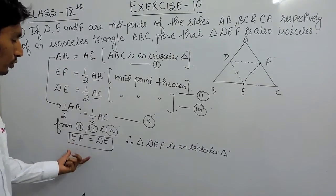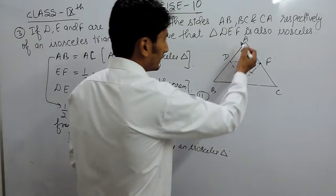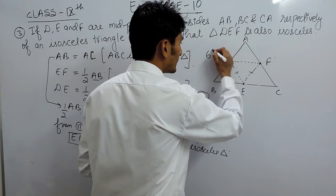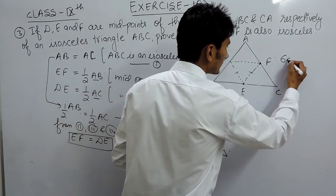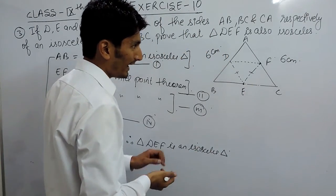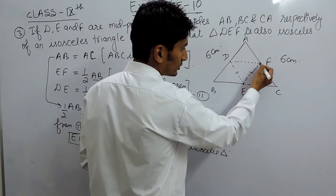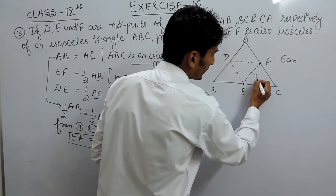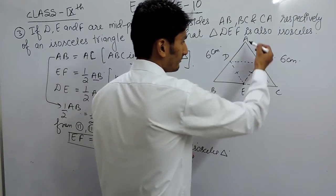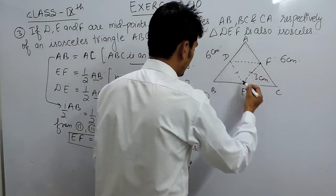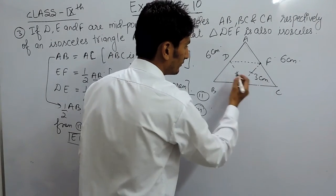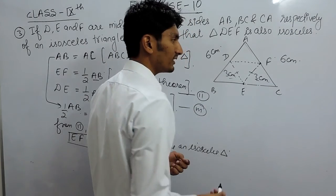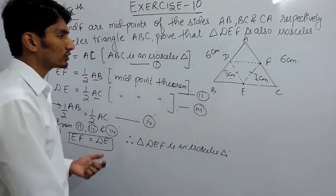In other words, if you are not able to follow, you can understand it with a numerical example. If ABC is an isosceles triangle, we can take AB as 6cm and AC as 6cm since the two sides are equal. By the midpoint theorem, joining the two midpoints gives a segment equal to half of 6cm, which is 3cm. Similarly the other segment is also 3cm. So in triangle DEF two sides are equal — both 3cm — making it an isosceles triangle.